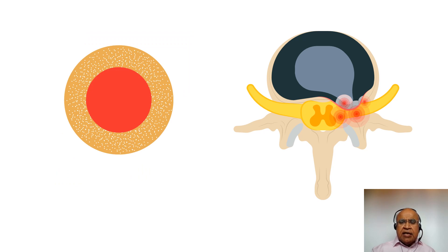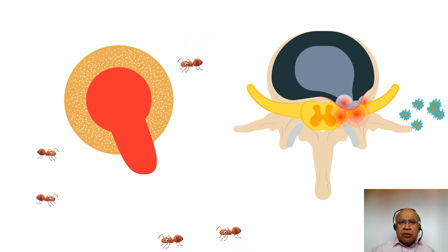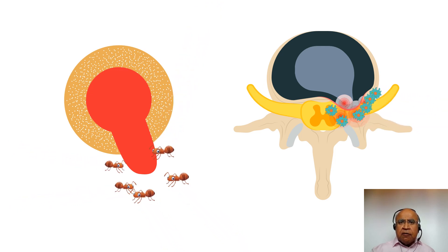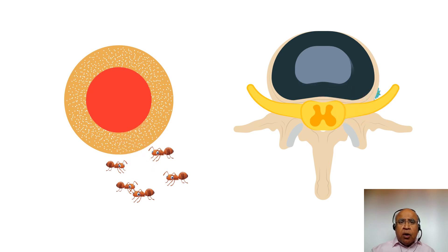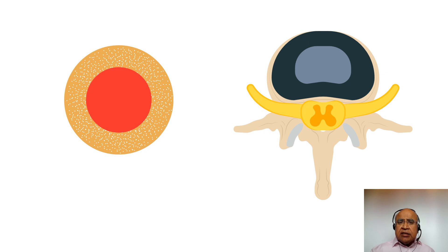The prolapsed disc is like jam that has leaked out of a jam donut. The macrophages eating and digesting the prolapsed disc material is similar to friendly ants eating away the jam that has leaked out. The inflammation attracts the macrophages; the leaked jam attracts the ants. Unfortunately, strong anti-inflammatories or steroid injections can decrease the inflammation and halt the natural mechanisms available for the body to handle a disc prolapse. It is best to discuss with your doctor the best medicines to take.